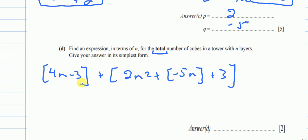Simplifying: the −3 and +3 cancel out. The n² term remains as 2n². Combining the n terms: −5n + 4n = −n. So the final answer is 2n² − n.